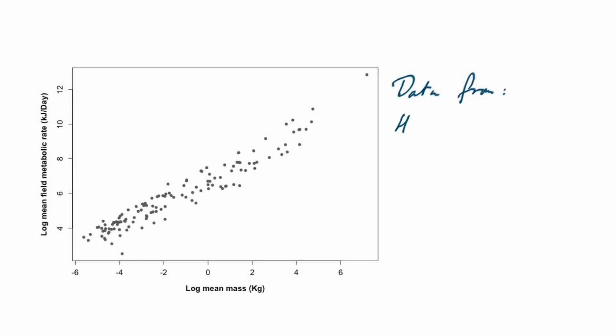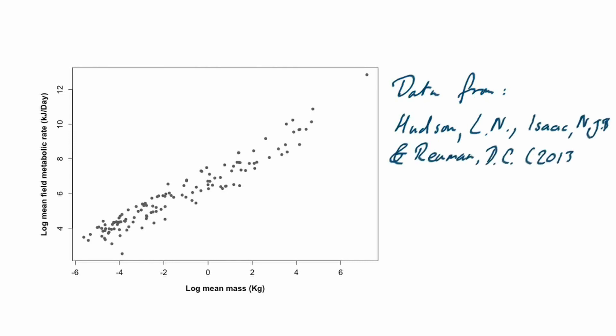The data we're going to be using are data on field measurements of metabolic rate and mass for 133 animal species, derived from a publication here. They have a much more sophisticated analysis than the one we're going to talk about, so if you want to know all about that, I recommend you read the paper.